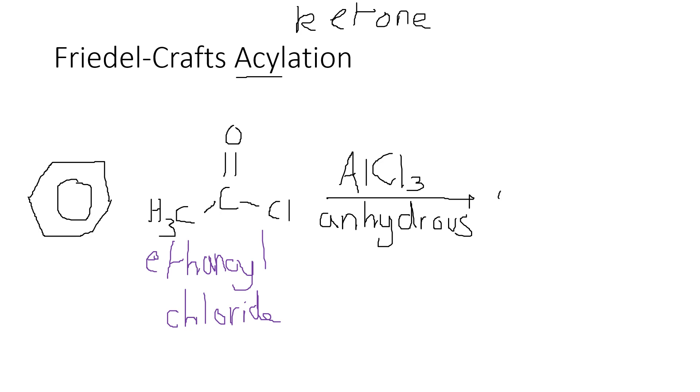And the product would therefore be a benzene ring that is now bonded to this carbon here. So C double bond O and then CH3. And the byproduct is HCl. That would also have been the byproduct from the previous reaction as well. I forgot to put that on there. We're coming into land now. We're just going to look at how we introduce halogens into the benzene ring as well.